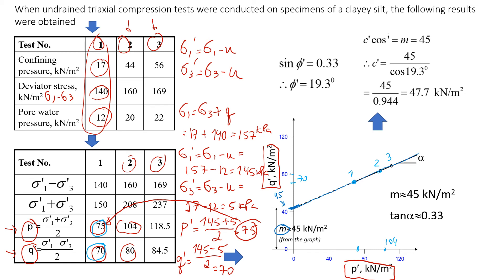And this value is alpha. It's not friction angle, not equal to friction angle. But we're going to find the friction angle once we know this value of alpha.